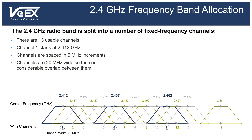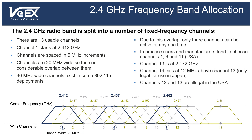To make matters worse, the 802.11n standard allows the creation of 40 MHz channels by bonding two 20 MHz channels together in order to achieve a higher data rate, but this ends up creating even fewer non-overlapping channels and even more interference.